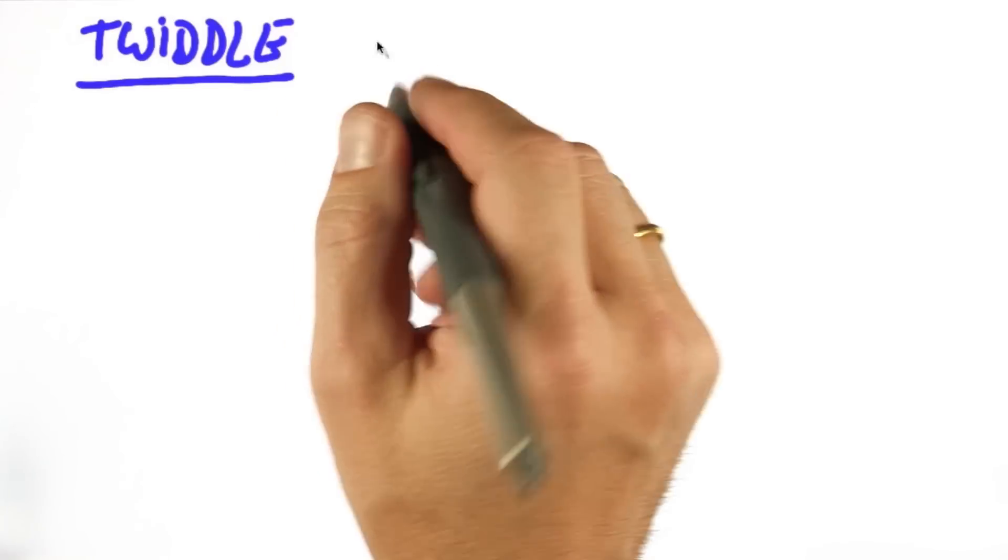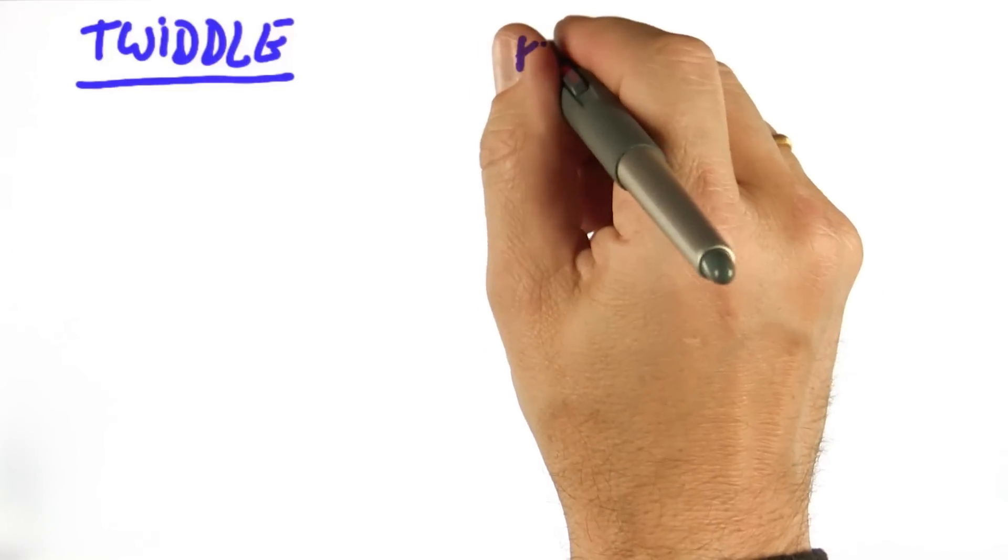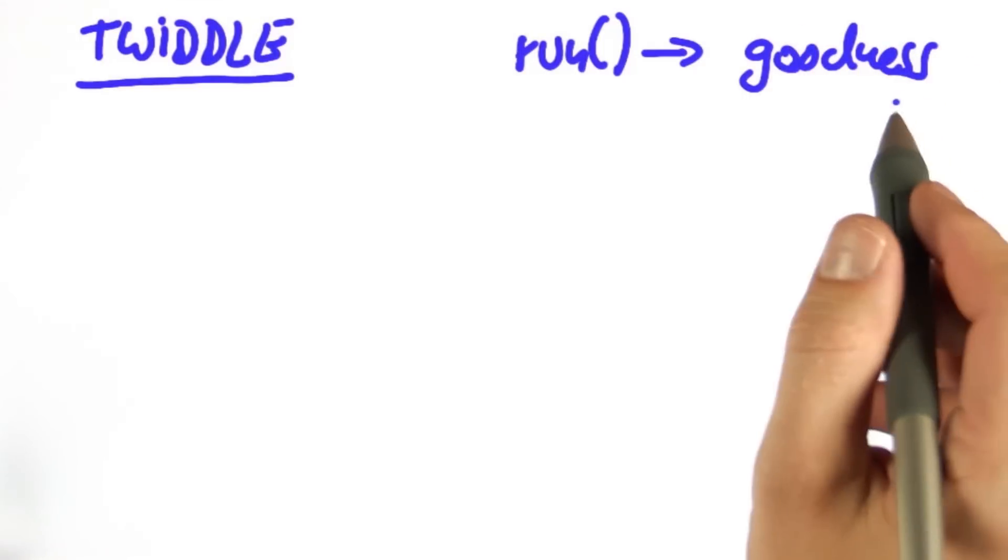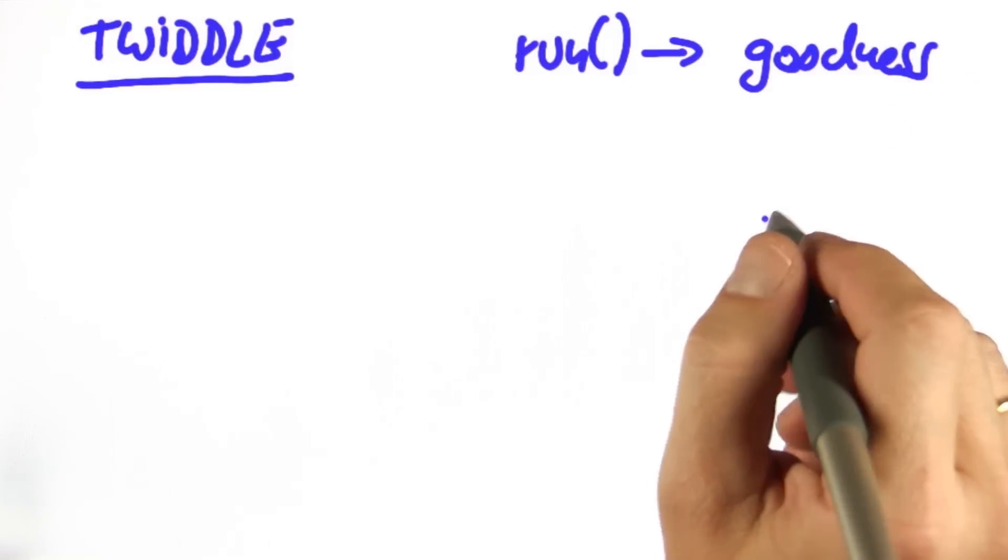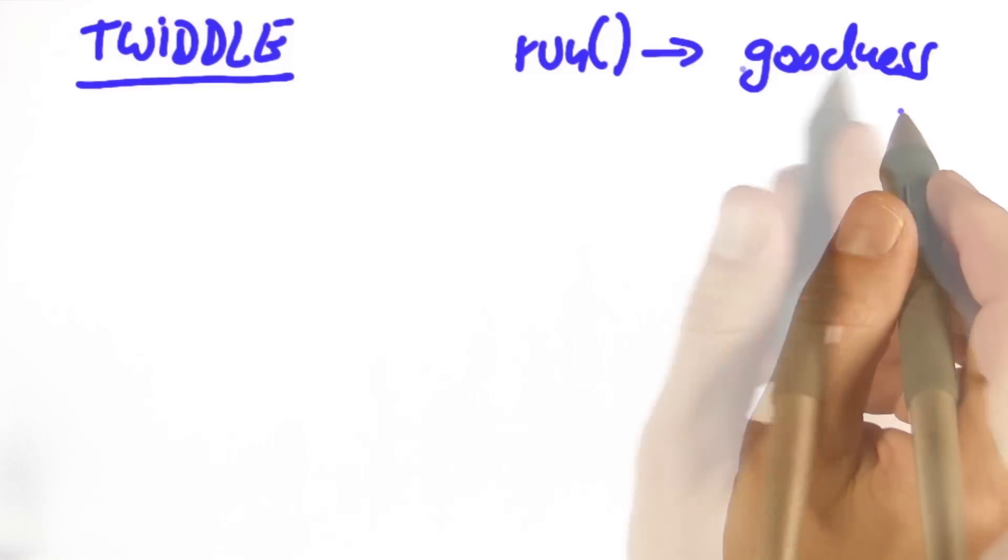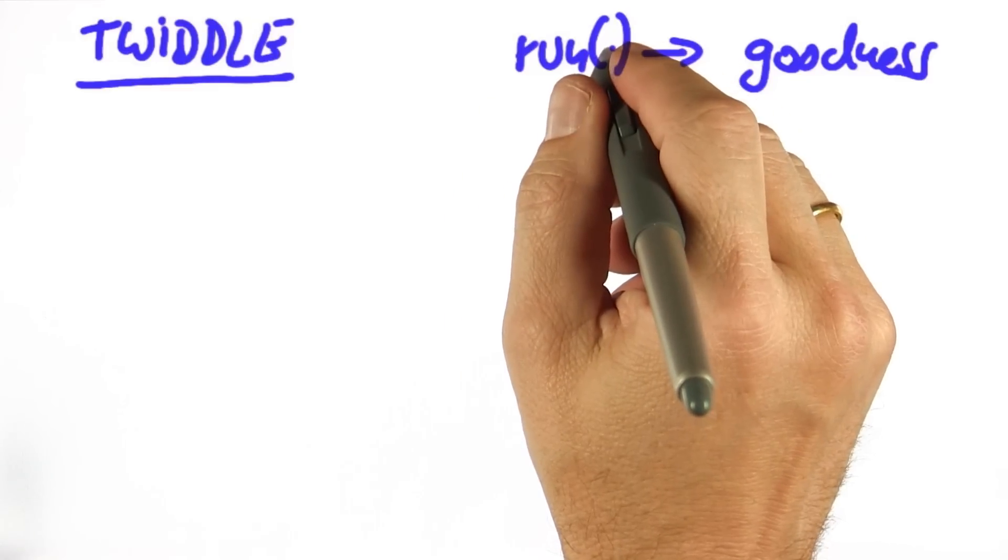In Twiddle, we're trying to optimize for a set of parameters. To do so, our function run must return a goodness. This goodness might be the average cross-track error. I want you to implement Twiddle so as to minimize the average cross-track error. If that's the case, then the output of run depends on the three parameters.